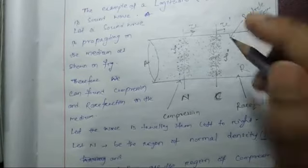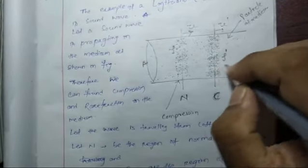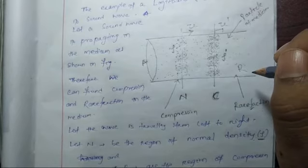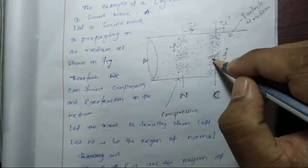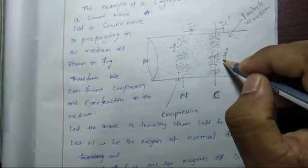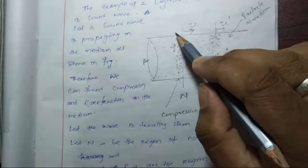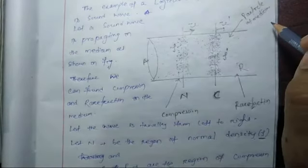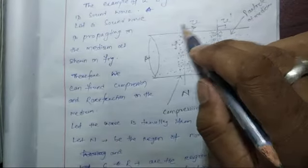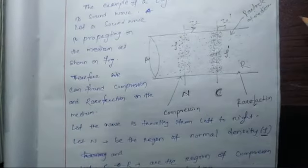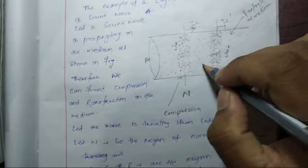We can also notice that we get rarefaction because all the particles are oscillating about their mean position. Due to this oscillation we perceive a wave moving from left to right. The particles are oscillating about their mean position.